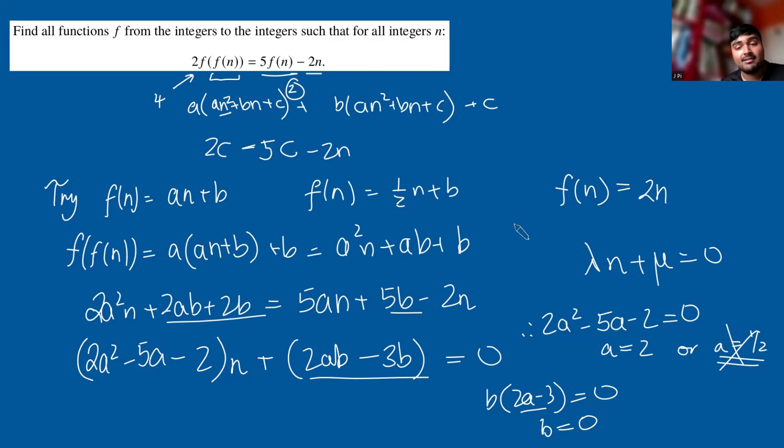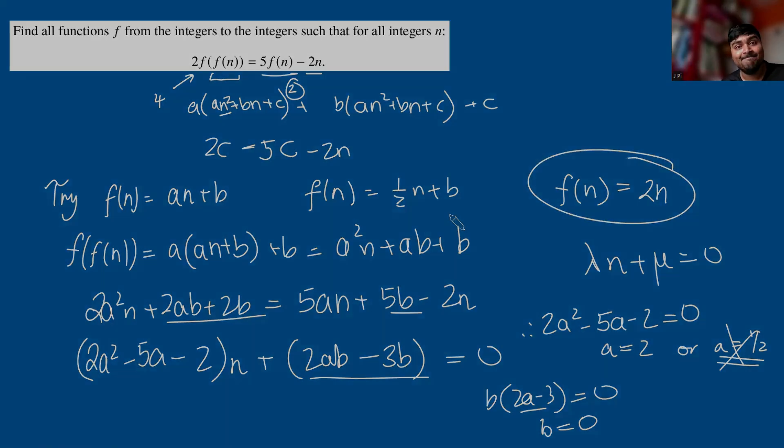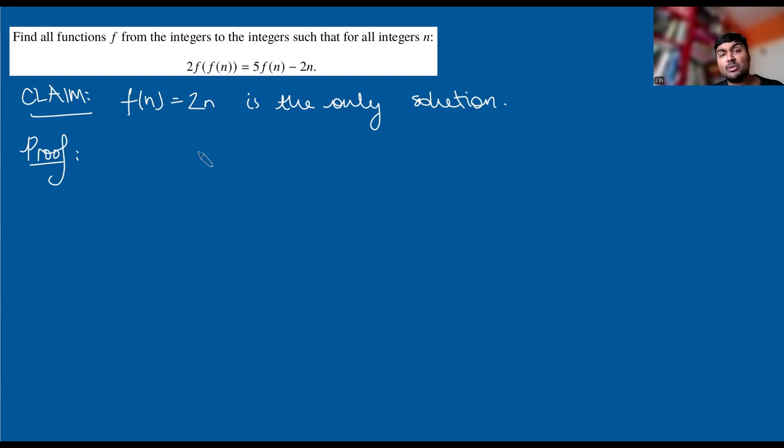From our earlier analysis, where we were looking at this equation and established f(n) couldn't be quadratic or constant, the only possibility was it's linear. From that analysis, we get the feeling that there can't be many more functions f(n) that work here. In fact, there aren't any more. This is the only one: f(n) = 2n.